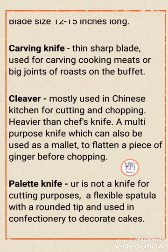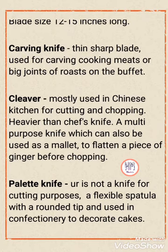Next one is the cleaver. The cleaver is mostly used in the Chinese kitchen for cutting and chopping. It has a large wide blade and is heavier than a chef knife. This is a multi-purpose knife because it is also used as a mallet — for example, to flatten a piece of ginger before chopping.